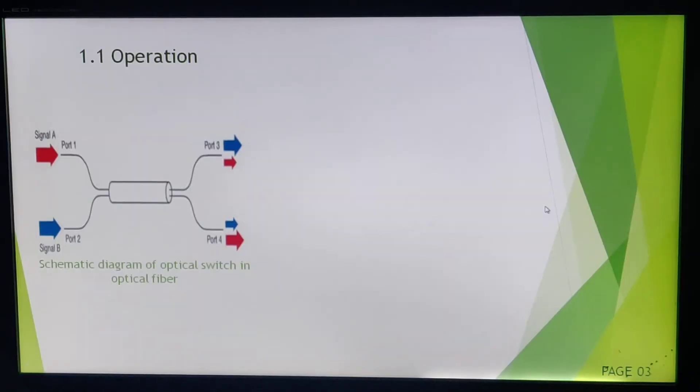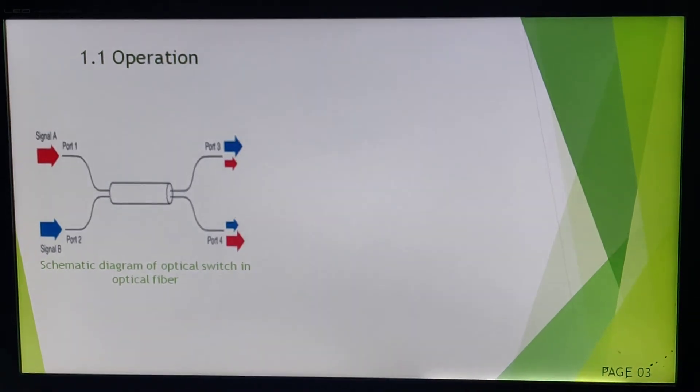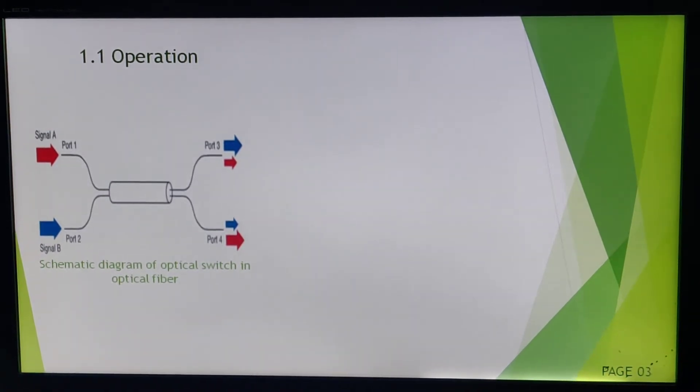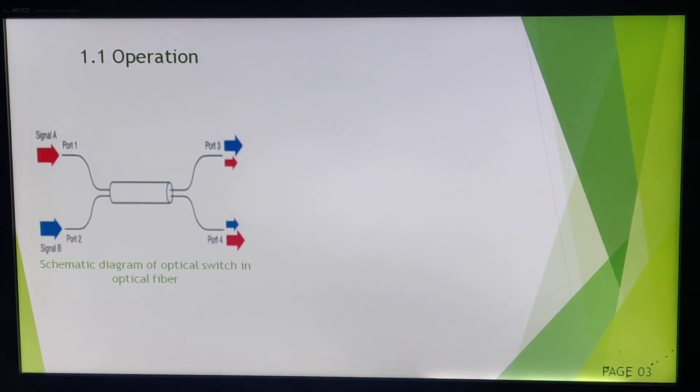Next, this is operation. This is a basic diagram showing a two-port network. Basic optical switch port 1, port 2—two signals are there, signal A and signal B—and at the receiving side we are having two ports, port 3 and port 4. Optical switch can be handled mechanically, that means manually we can shift and change which signal is to be transmitted.